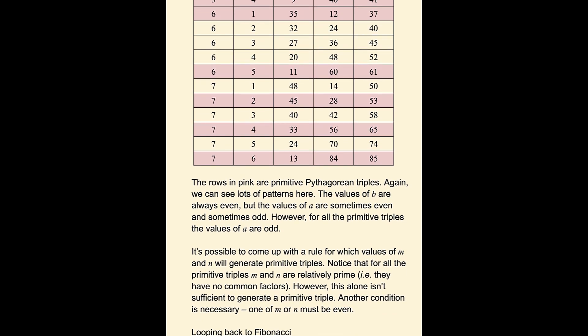It is actually possible to come up with a rule for which values of m and n will generate primitive triples. Notice that for all the primitive triples, m and n are relatively prime. That means that they have no common factors.